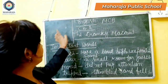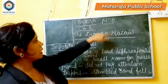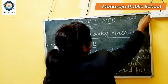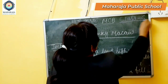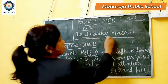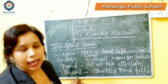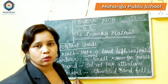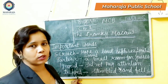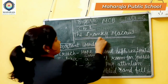Let's begin. The first chapter of your MCB book — you can see here English MCB, and this is for Class 6 only. Chapter one: 'The Cranky Mecca.' As always, I tell you that firstly you should know the meaning of the chapter title. So what is the meaning of 'cranky'?